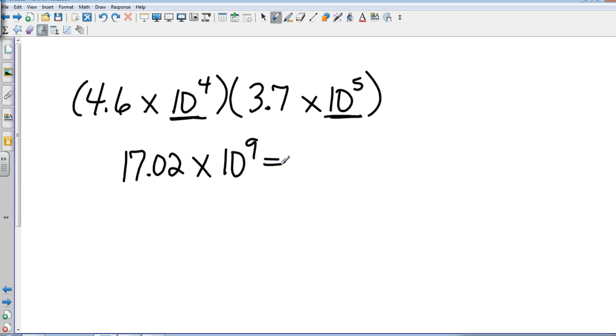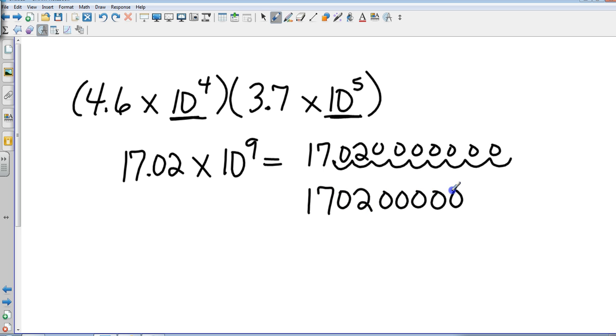I want you to first tell me what the number is. So I have 17.02. And I'm going to move that decimal because it's positive. Nine spaces to the right. One, two. I'm going to fill everything in with zeros. And then go back and put in my commas. So that is 17,020,000,000.